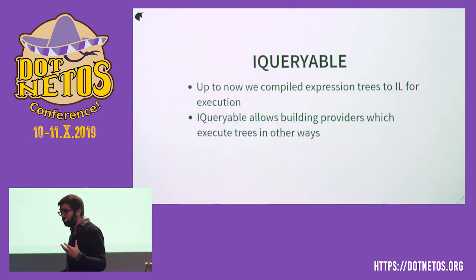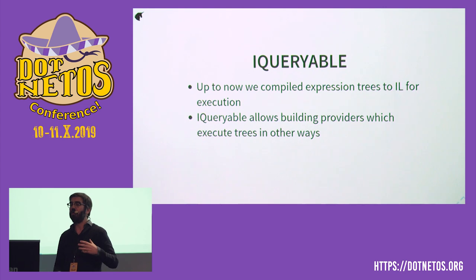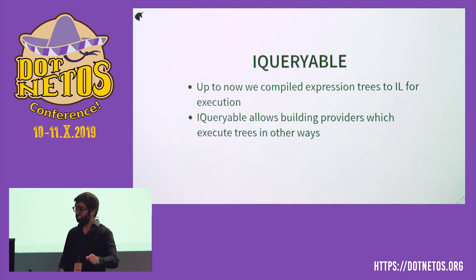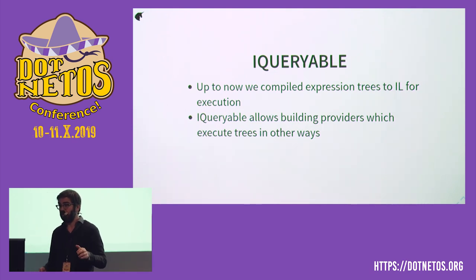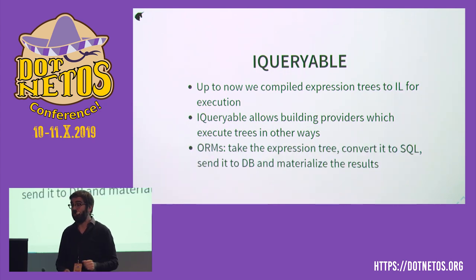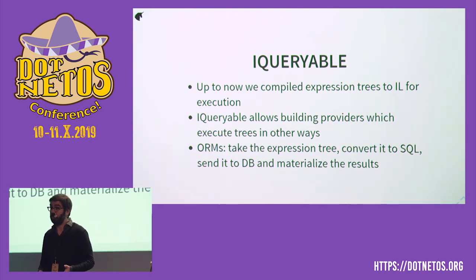Getting closer to our ORM world: expression trees are also the basis for a language feature called IQueryable. What we've seen up to now is taking expression trees and compiling them into a delegate we can invoke. But IQueryable allows us to write a provider — a piece of code that, instead of compiling and invoking that thing, gets it as input and executes it in some other way. Typically, an ORM is going to take this expression tree, translate it into SQL, do a sort of transformation, and send it to the database. This is what an ORM does — it's basically an IQueryable provider. This is what the query pipeline is.